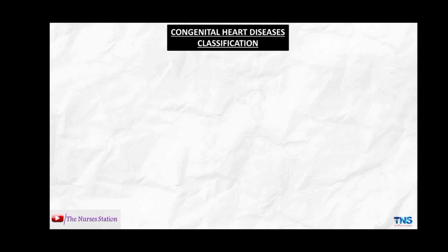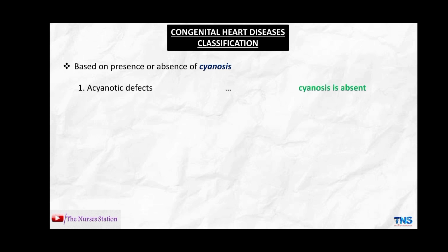The first classification of congenital heart disease is based on the presence or absence of cyanosis — the bluish discoloration of the skin, mucous membranes, and nail beds due to lack of oxygen in the blood. This includes acyanotic defects, where there is no cyanosis, and cyanotic defects, where cyanosis is present.